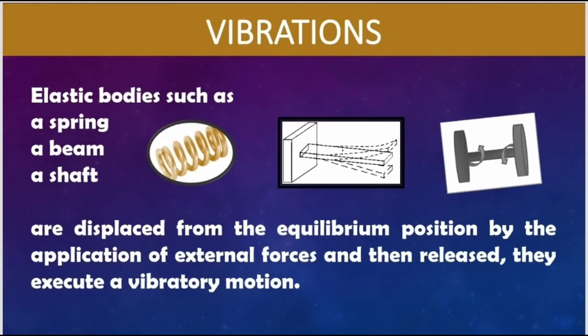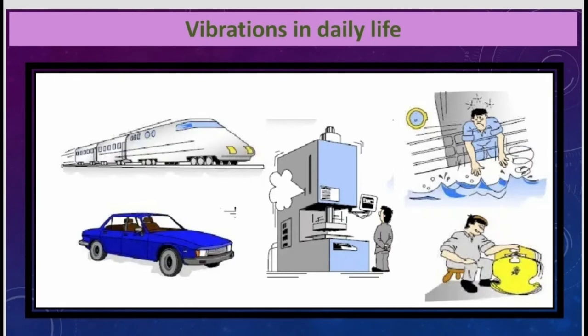Introduction. Elastic bodies such as a spring, a beam, or a shaft are displaced from the equilibrium position by the application of external forces and then released — they execute a vibratory motion. Examples of vibrations in our daily life include locomotives, cars, machines, earthquakes, and musical instruments.